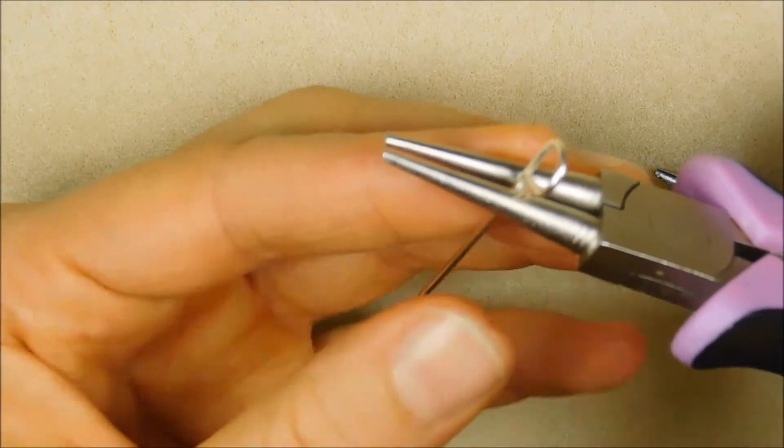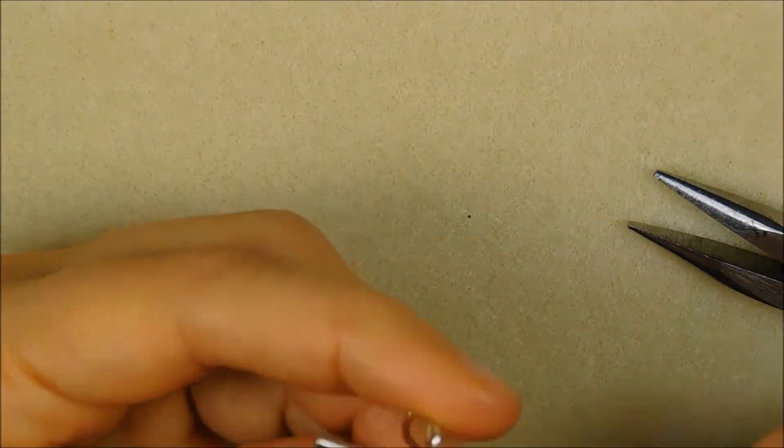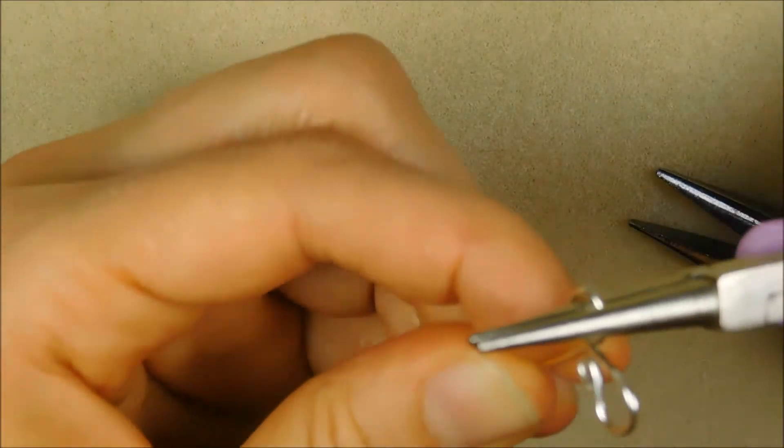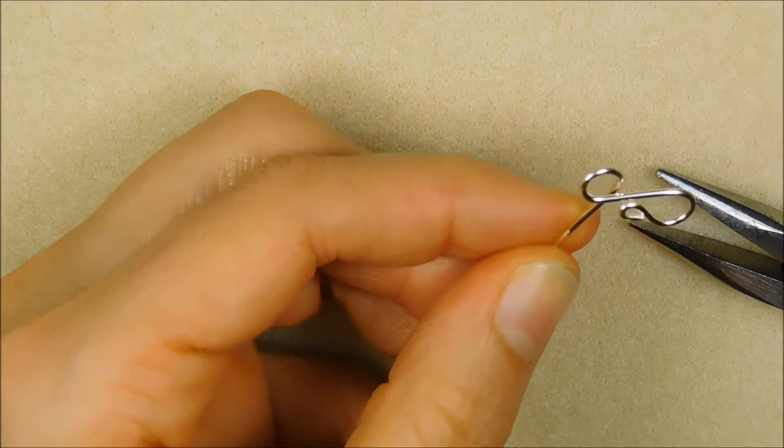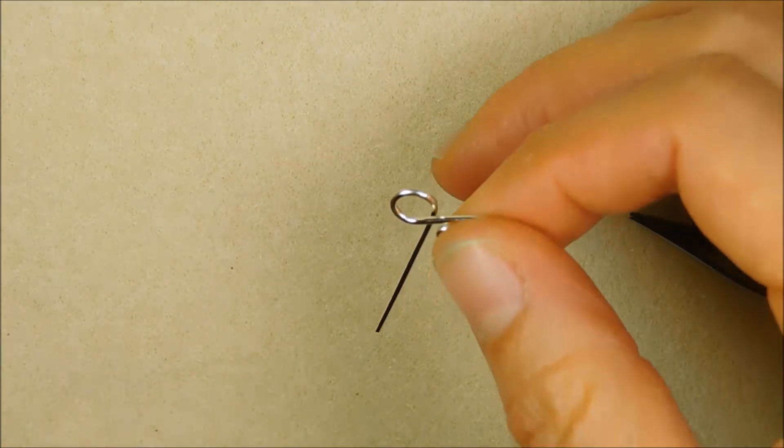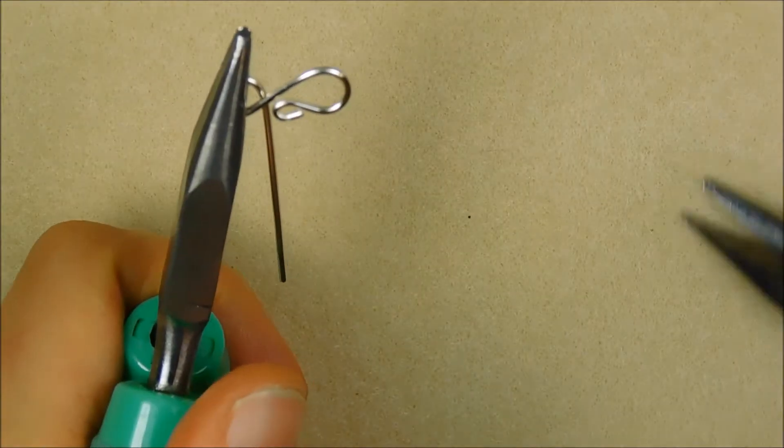Just like with the infinity link, make an opposite and identical loop on the other side of the wire. For now, I'm just going to use the midpoint on my pliers. Unlike the infinity link, we will be creating a 90 degree intersection rather than ending the loop.